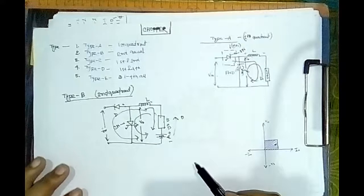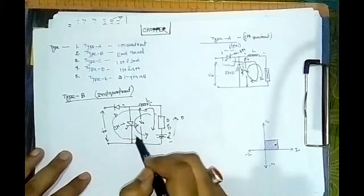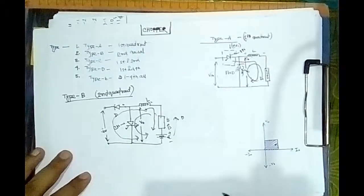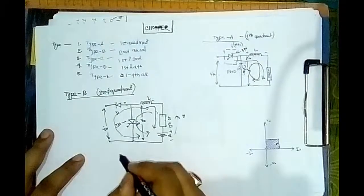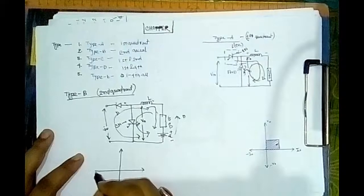The load current is opposite to the flow direction of the voltage. So the load current is flowing from that direction, but the voltage is flowing from that direction. So the output we will be getting will be of that type.